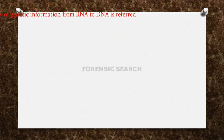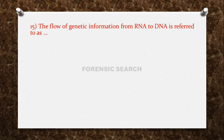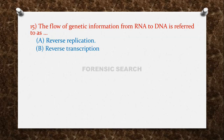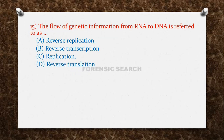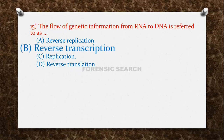The next question: the flow of genetic information from RNA to DNA is referred to as — Option A: reverse replication. Option B: reverse transcription. Option C: replication. Option D: reverse translation. The correct answer is option B — reverse transcription.